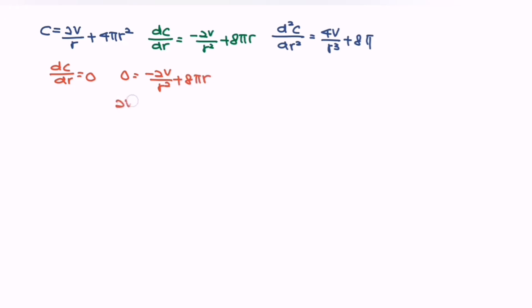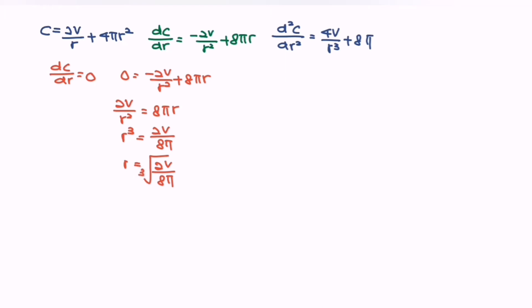Rearranging: 2V/r² = 8πr, so r³ = 2V/(8π), giving r = ∛(2V/8π). Next, we test this value using the second derivative. Substituting r³ = 2V/(8π) into d²C/dr² = 4V/r³ + 8π, we get 4V · (8π/2V) + 8π.